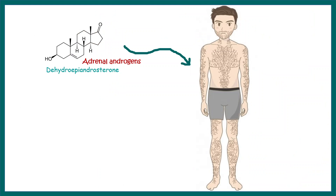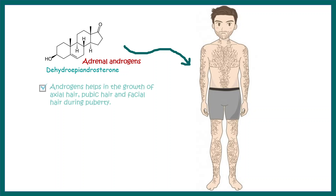Adrenal androgens such as dehydroepiandrosterone and androstenedione are responsible for secondary sexual characteristics — for example, growth of axial hair, pubic hair, and facial hair during puberty. Androgens also help in prostate development in males.